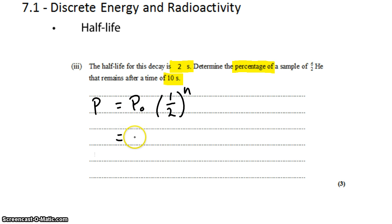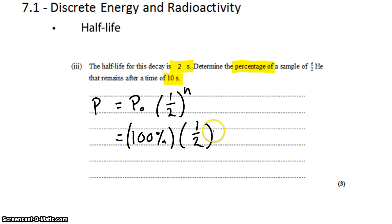If this is the original percentage, then we're going to start with 100% of the sample, and we'll multiply that by 1/2 to the power of the number of half-lives elapsed. If the half-life is 2 seconds, and 10 seconds have occurred, 5 half-lives fit in that window of time. 2 seconds plus 2 seconds plus 2 seconds plus 2 seconds plus 2 seconds is 10 seconds — that's 5 lots of 2 seconds, that's 5 half-lives.